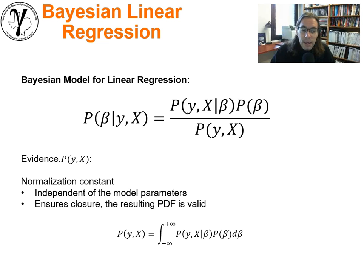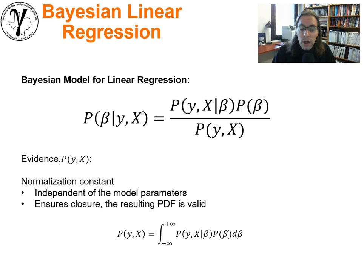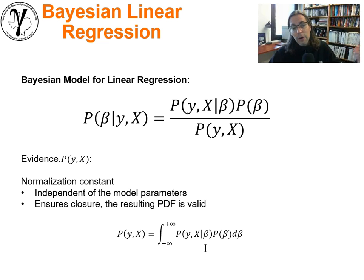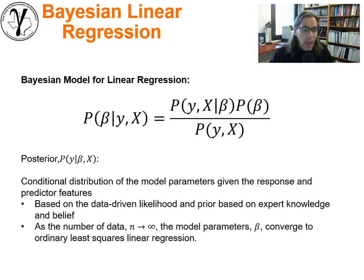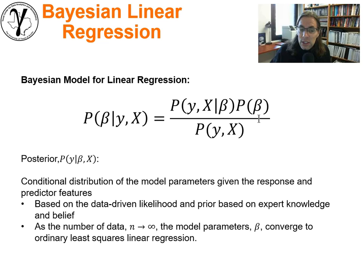The evidence term is really a normalization constant. It ensures closure of the system, that the posterior is a valid PDF — the area under the curve sums to one. You can calculate it by integrating across the likelihood and prior over all possible combinations of the parameters. This is pretty tricky for continuous variables in a higher dimensional space, and that's part of the reason why we're motivated to use Markov chain Monte Carlo methods to sample from the posterior in a way that we don't have to work out the evidence term. The posterior is the conditional distribution of the model parameters given the response and predictor features observed within the training data, also based on our prior model.